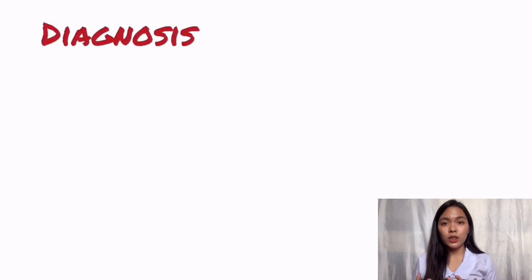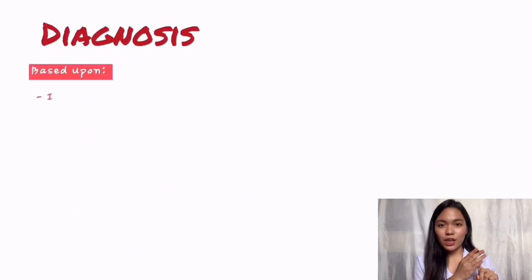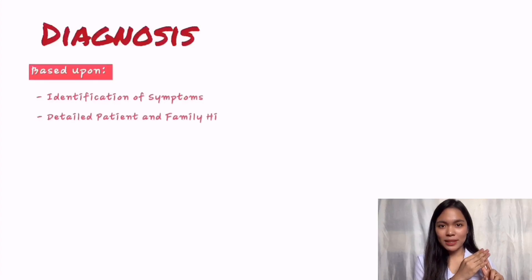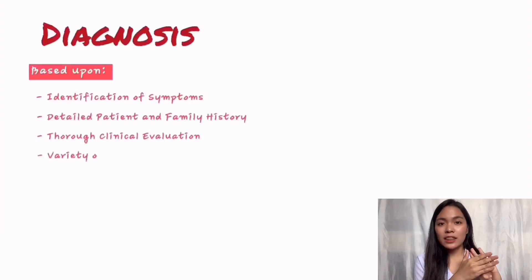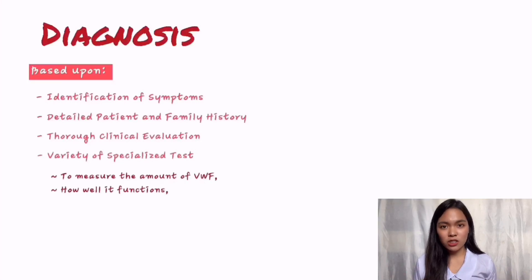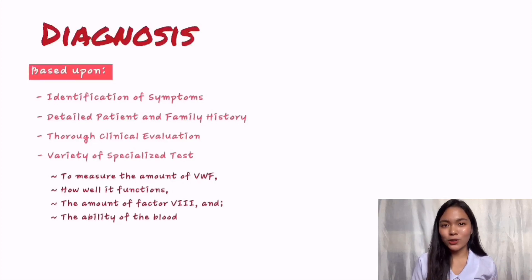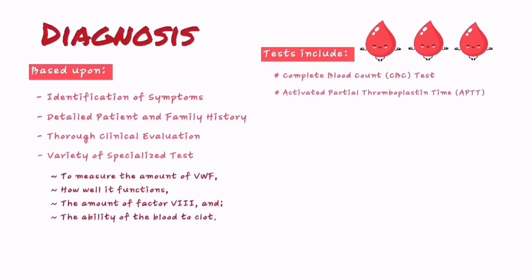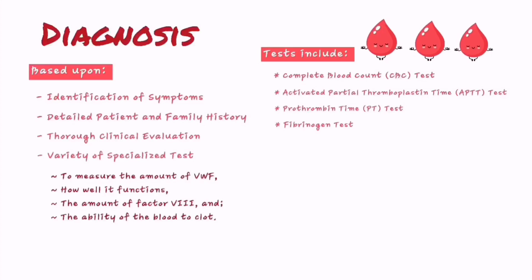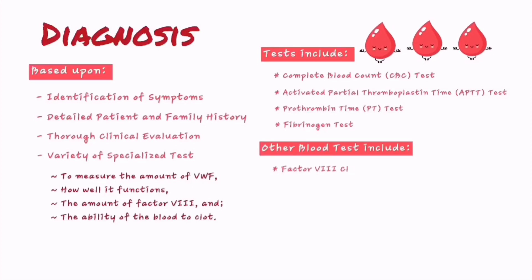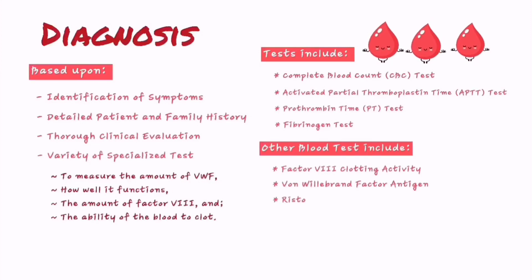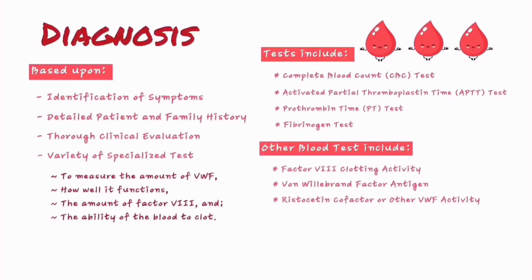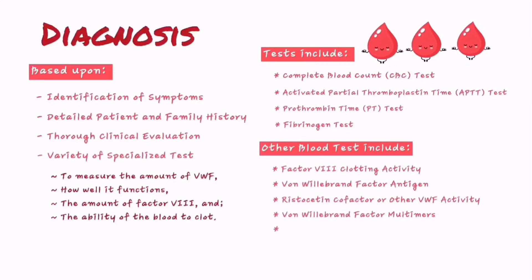A diagnosis of von Willebrand disease is based upon identification of characteristic symptoms, a detailed patient and family history, a thorough clinical evaluation, and a variety of specialized tests. Such tests may measure the amount of von Willebrand factor, how well it functions, the amount of factor VIII, and the ability of the blood to clot. These tests include complete blood count (CBC), activated partial thromboplastin time (APTT), prothrombin time (PT), and fibrinogen test. Other blood tests a doctor can order include factor VIII clotting activity, von Willebrand factor antigen, ristocetin cofactor or other von Willebrand factor activity, von Willebrand factor multimers, and platelet aggregation test.